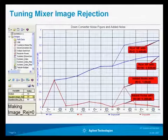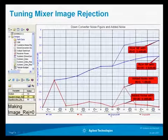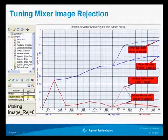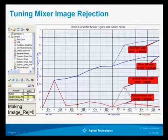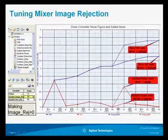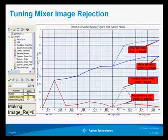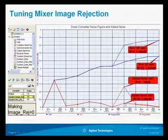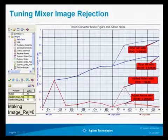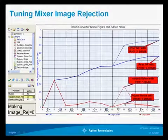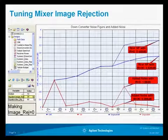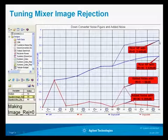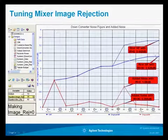As we change the image rejection with the tune command, we can see that with image rejection at 0, the noise contribution of the mixer is approximately 0.2 dB. The total overall noise figure changes depending on that setting, ranging from anywhere between 2.6 to 3.4 dB.